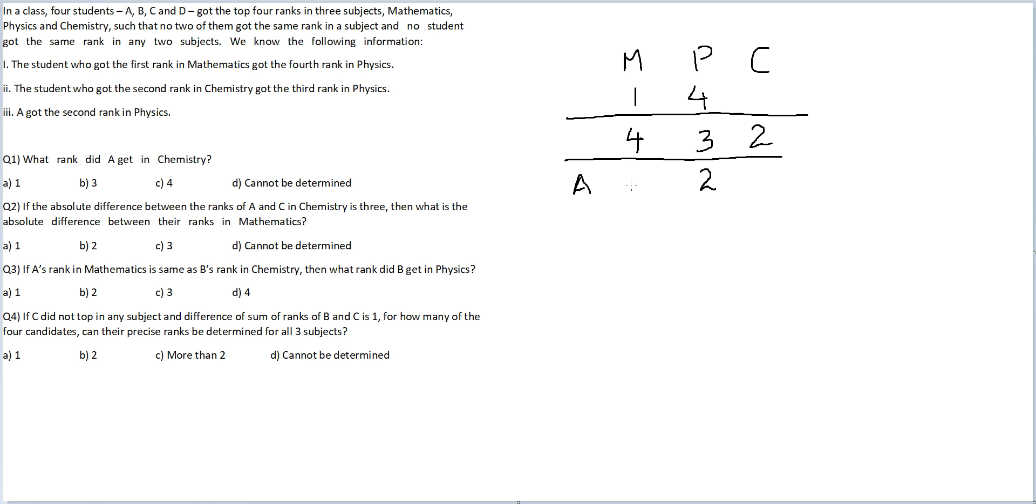Now, A in Mathematics will either get two or three. He cannot get two because Physics already he has rank two. So this will be three. And the last person who is left will necessarily have rank two. And the same person will also have rank one in Physics.